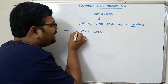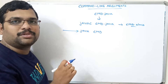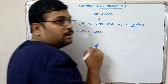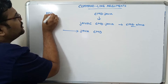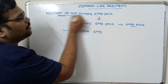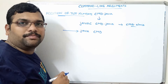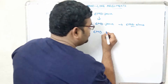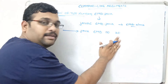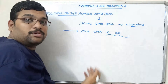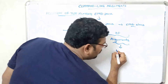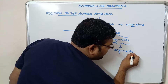At runtime, while running the program itself, we can pass inputs to the program. Whatever inputs the program needs should be written at the command line. For example, if we write a program for addition of two numbers, we need to give two inputs — a and b. We can write the command as java cmd 10 20, and these inputs are called arguments.